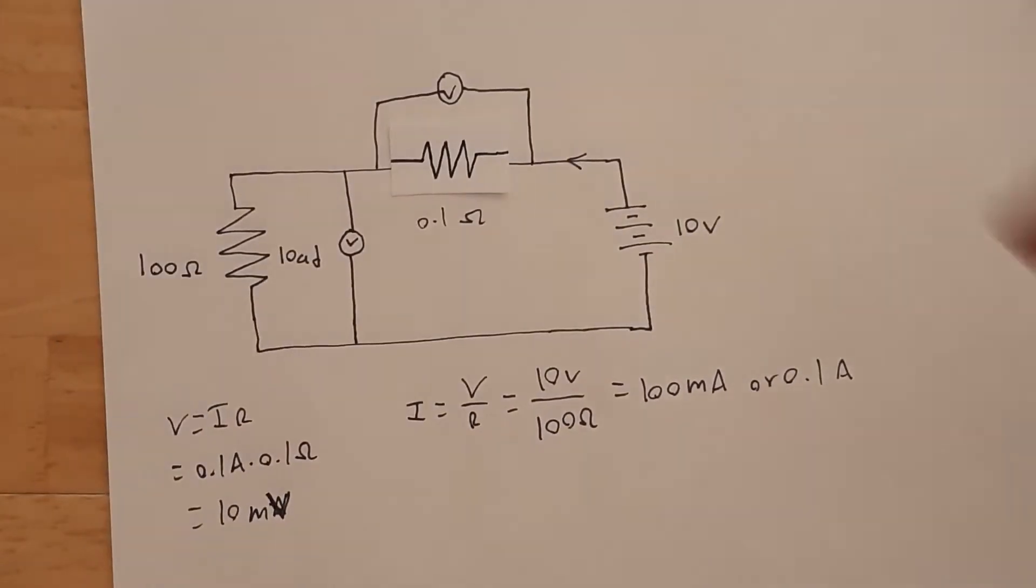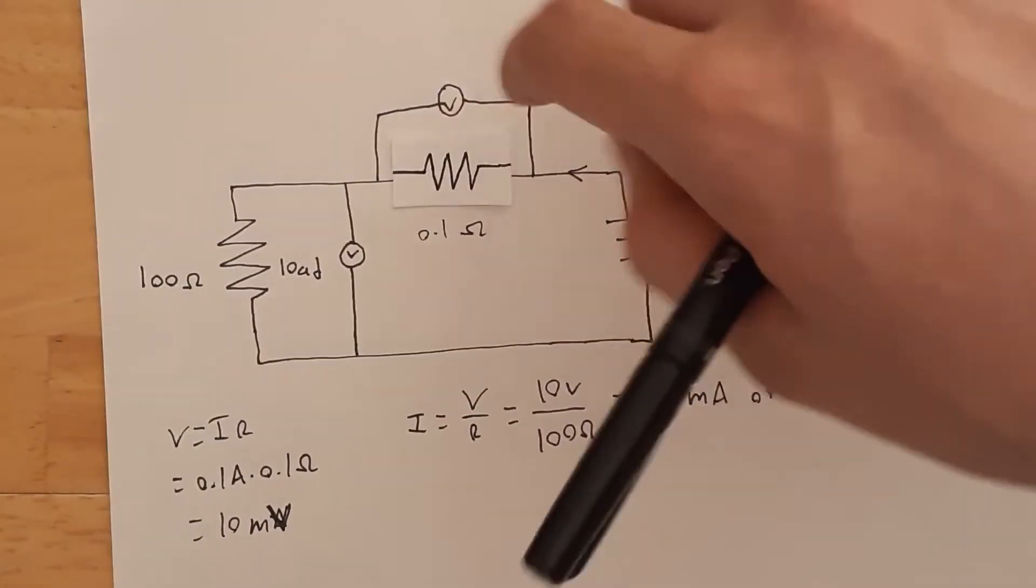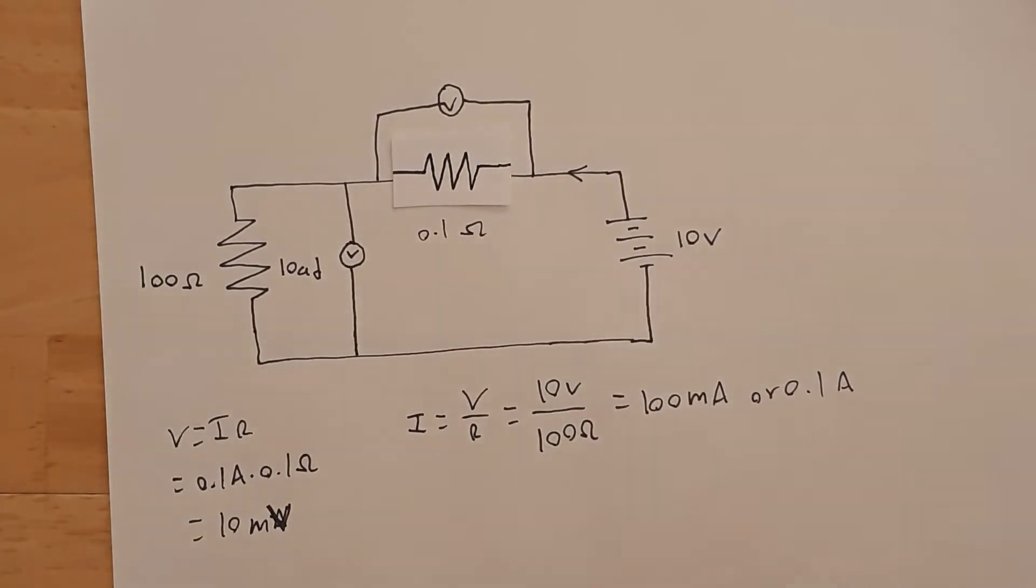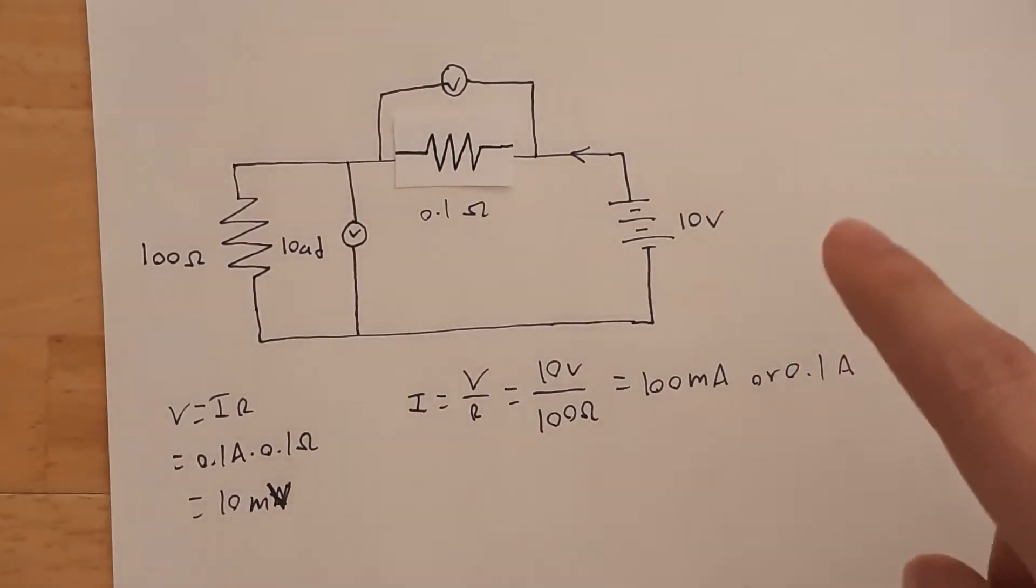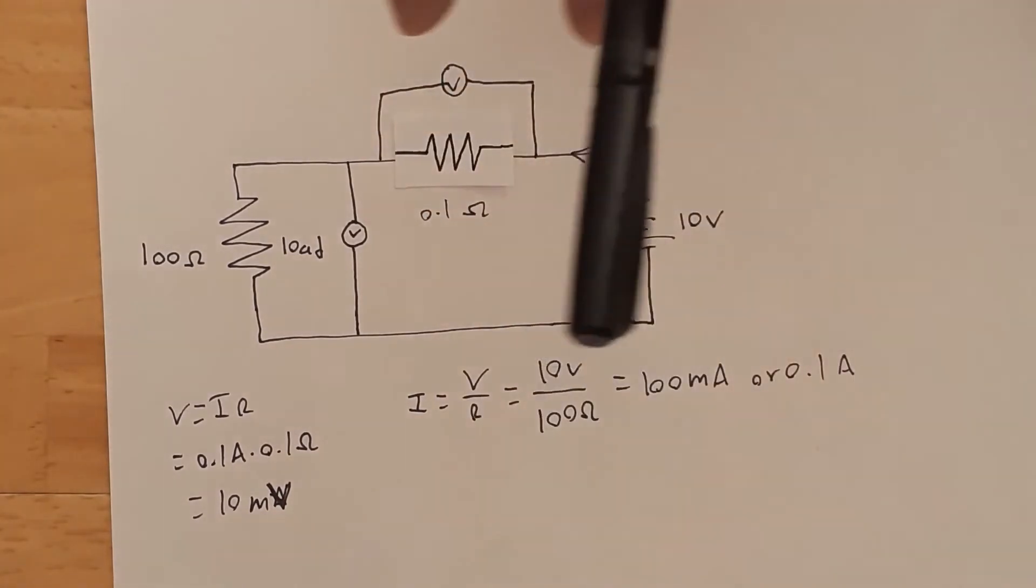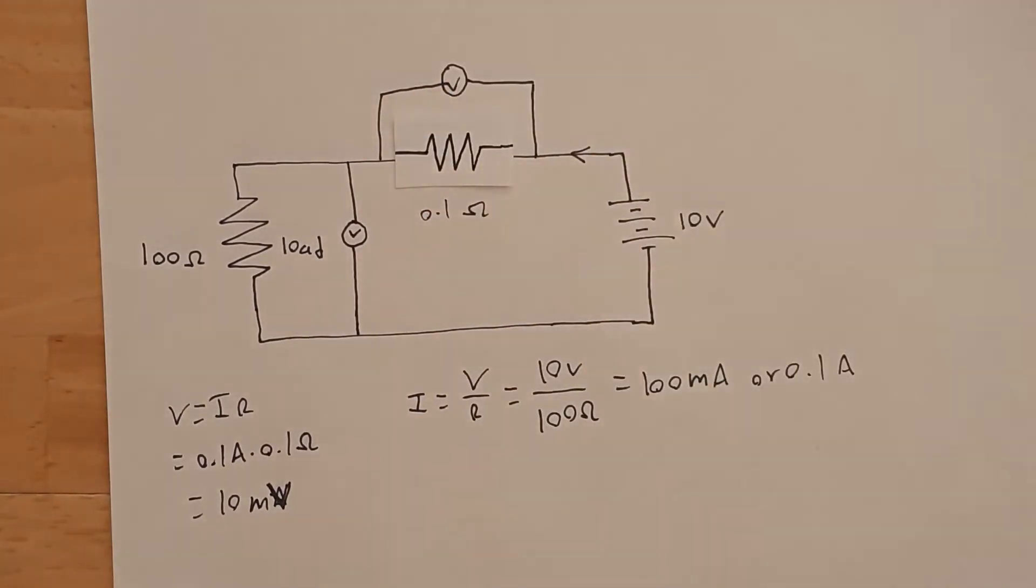We don't usually calculate that. We usually measure the voltage across this resistor. When we get a voltage, we convert that back into current by this equation right here again. We take the 10 millivolts, which is what we will see across this resistor, then divide that by the resistance of 0.1, then we'll get current.